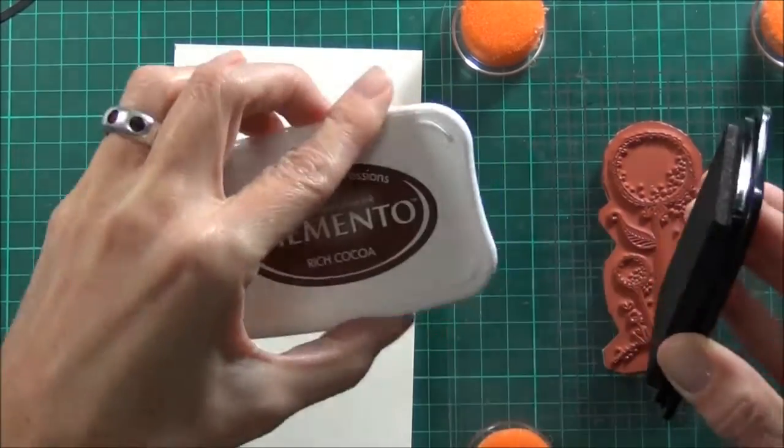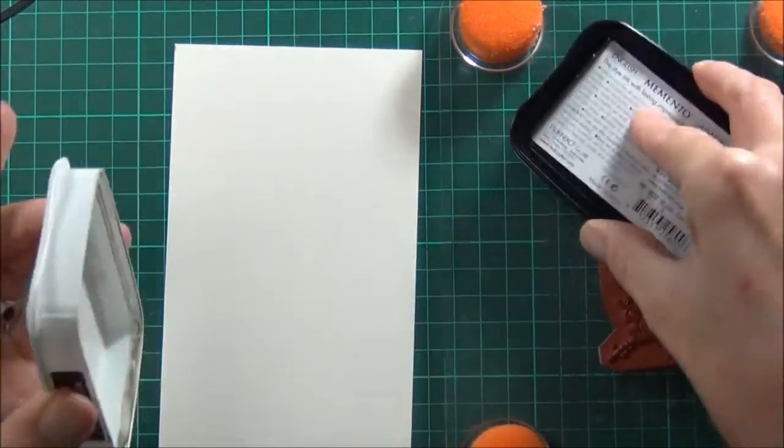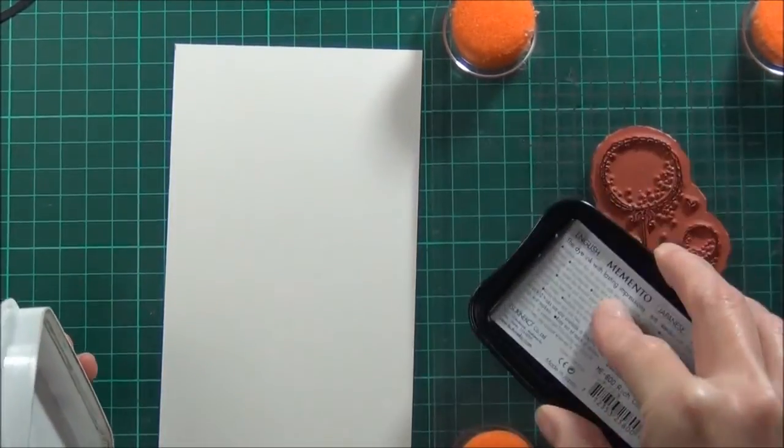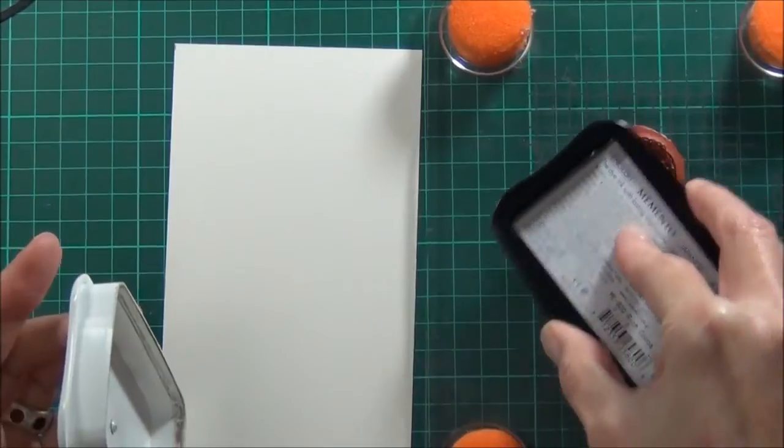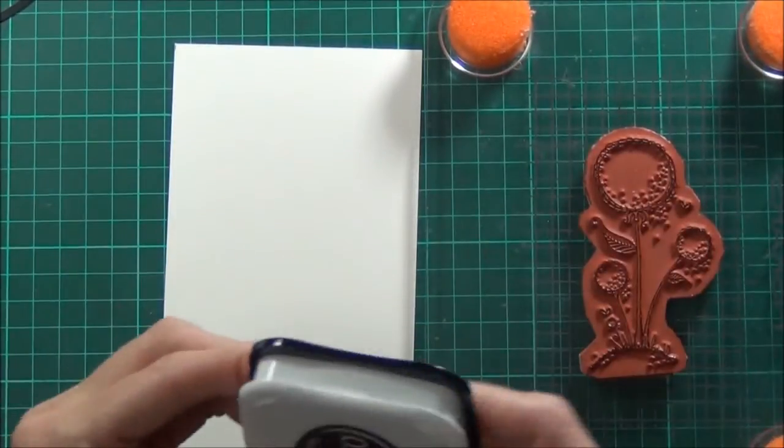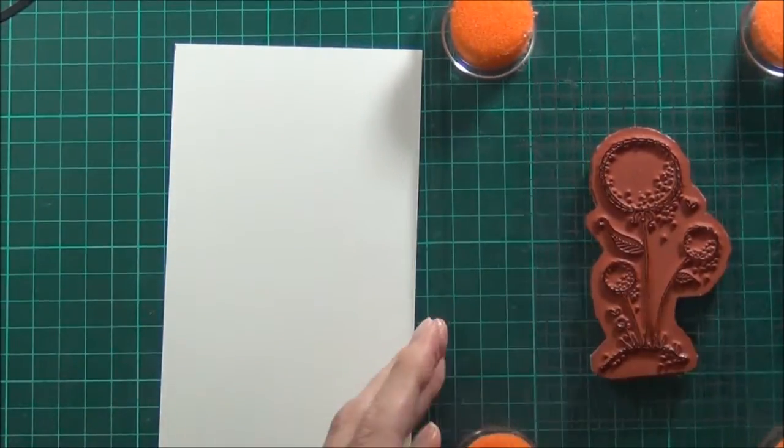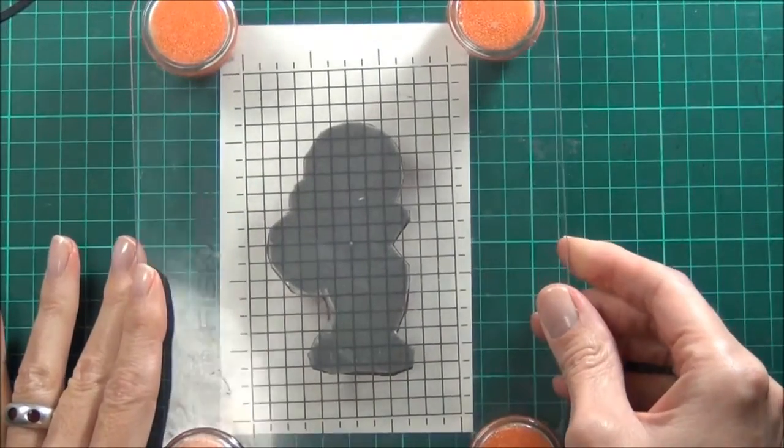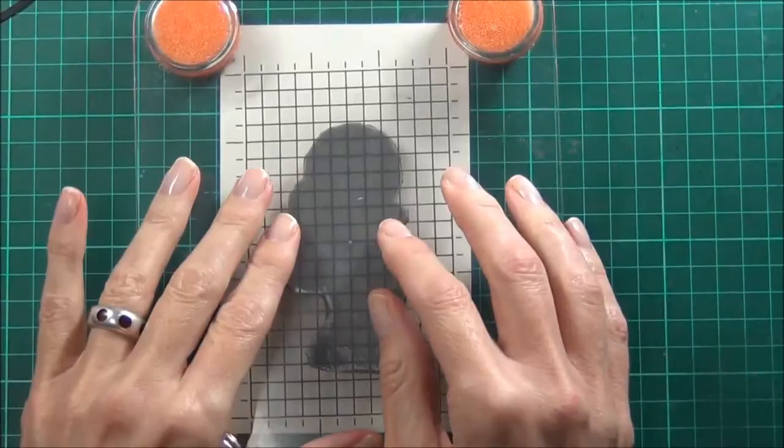I've got some Memento Rich Cocoa ink and a piece of vanilla cardstock. It's a smooth cardstock, and I'll stamp this in the center.